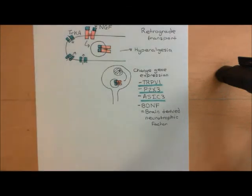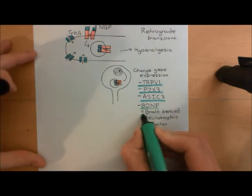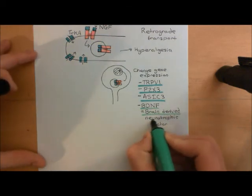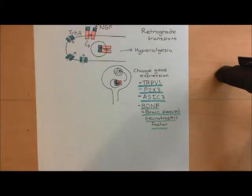That's another consequence of the activation of TrkA receptors: the upregulation of this new signaling molecule, BDNF, that can be used as a neurotransmitter between the primary nociceptive afferents and the secondary spinothalamic projection neurons. That is now nerve growth factor finished — the final component of the inflammatory milieu that I'm going to discuss.